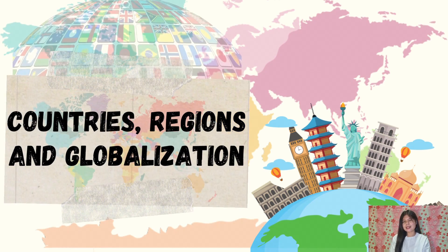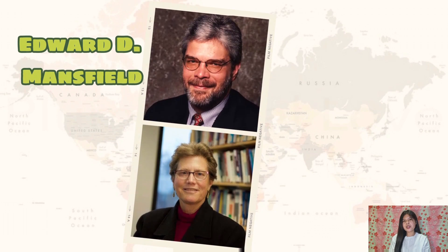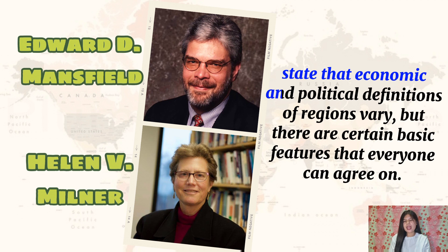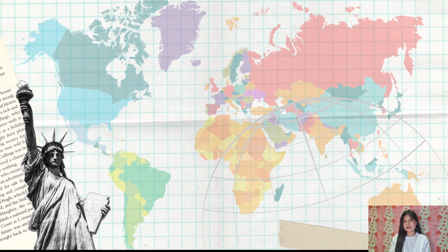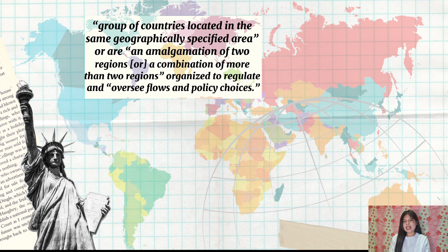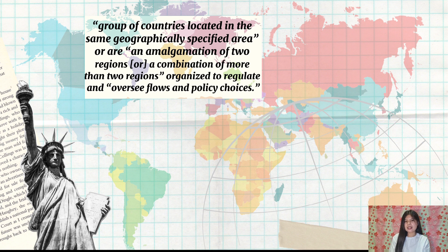Countries, regions, and globalization. According to Edward Demonsfield and Helen V. Melner, economic and political definitions of regions vary, but there are certain basic features that everyone can agree on. When we say a group of countries located in the same geographically specified area, or an amalgamation of two regions, or a combination of more than two regions organized to regulate and oversee laws and policy choices, we are referring to a region.